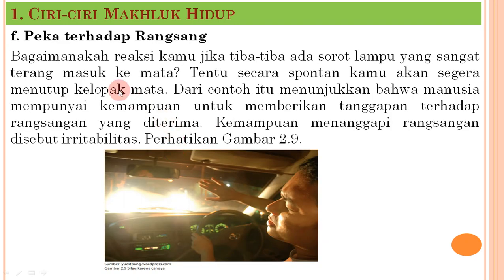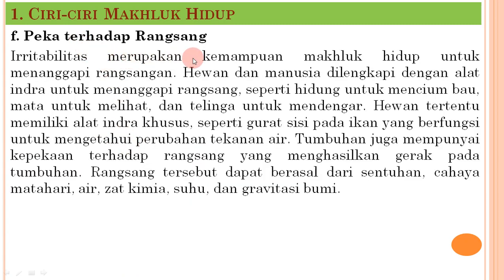Ciri selanjutnya adalah peka terhadap rangsangan. Jika tiba-tiba ada sorot lampu yang sangat terang masuk ke mata, secara spontan kita akan segera menutup kelopak mata. Kemampuan menanggapi rangsangan ini disebut irritabilitas, yaitu kemampuan makhluk hidup untuk menanggapi rangsangan. Hewan dan manusia dilengkapi dengan alat indera seperti hidung untuk mencium bau, mata untuk melihat, dan telinga untuk mendengar. Tumbuhan juga peka terhadap rangsang dari sentuhan, cahaya matahari, air, zat kimia, suhu, dan gravitasi bumi.